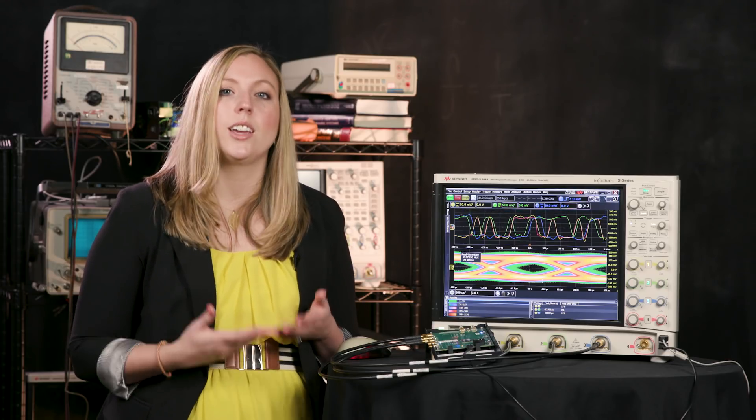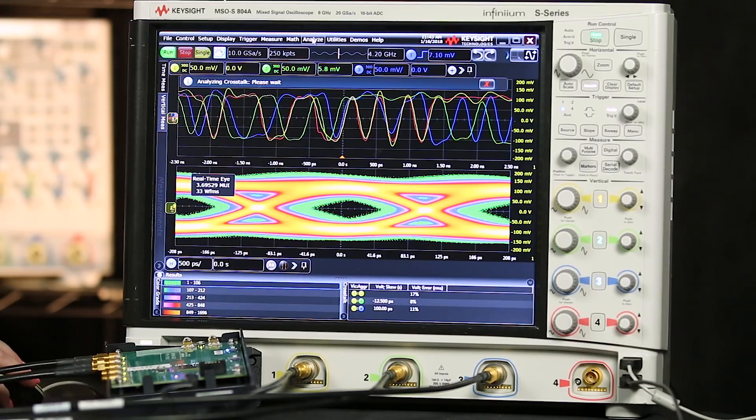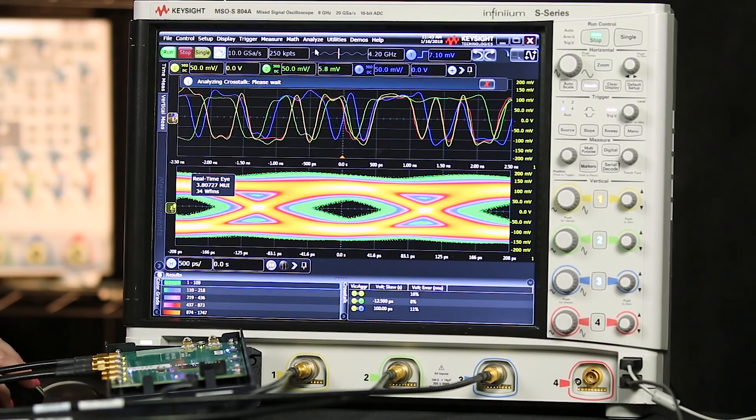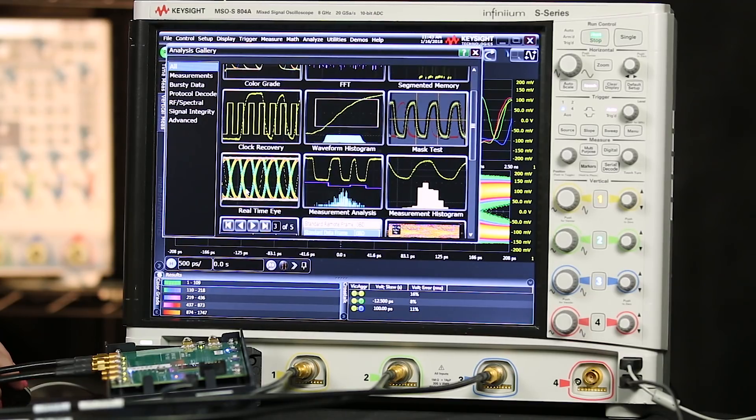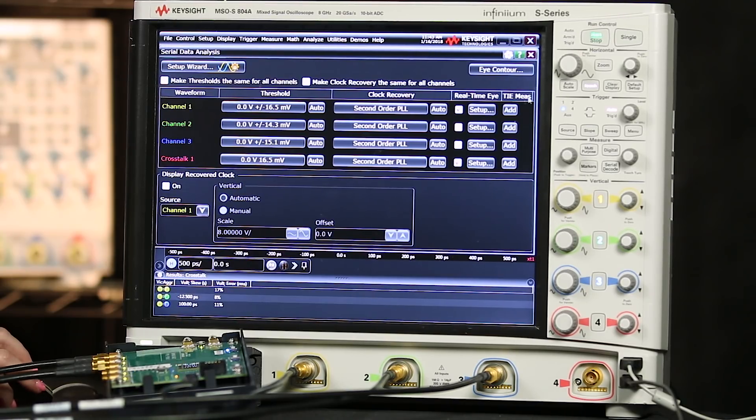I'll create an eye diagram of this function to find out just how much it can be improved. To create an eye diagram on a function, I'll go back to my analyze menu, and I'll choose gallery, and I'll scroll down to this real-time eye. And here's my function crosstalk one, and I'll turn on the eye diagram for that.